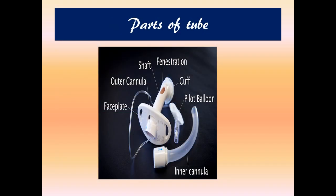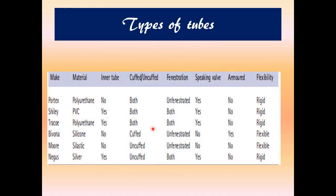The parts of a tracheostomy tube include: the face plate, the outer cannula (the shaft), the fenestration (the opening), the cuff (the balloon), the pilot balloon, and the inner cannula, which is inserted into the outer cannula.